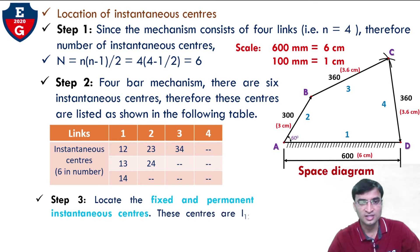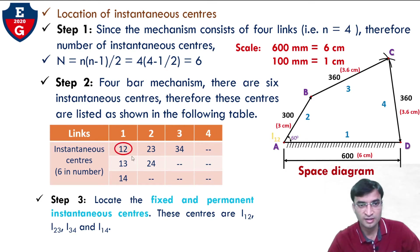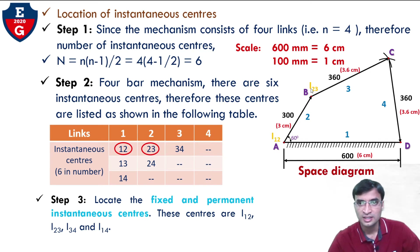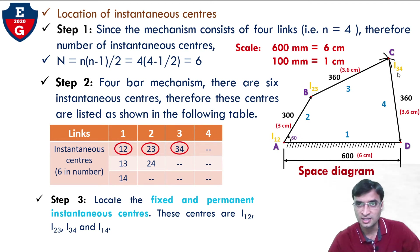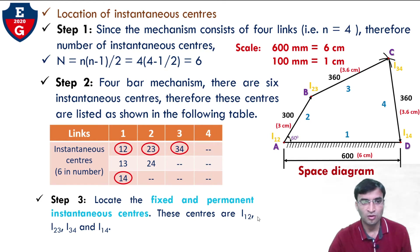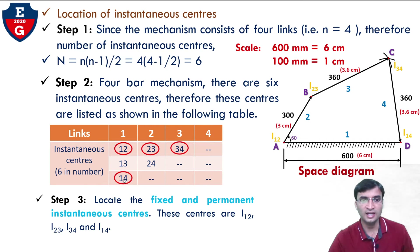Step 3: Locate the fixed and permanent instantaneous centers — that is I12, I23, I34, and I14. Here you can see: link 1 and link 2 meet at point A, so that is instantaneous center I12. Link 2 and link 3 meet at point B, so I23 is located there. Link 3 and link 4 meet at point C, so I34 is located. Link 1 and link 4 meet at point D, so I14 is located. We have already located the fixed and permanent centers: I12, I23, I34, and I14. Two instantaneous centers remain: I13 and I24.